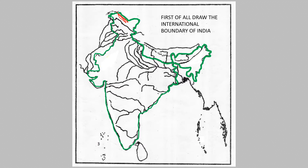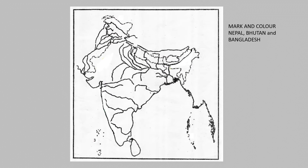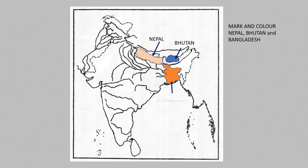Your first job is marking the international boundary line of India. The next step is marking in color Nepal, Bhutan, and Bangladesh. This area is Nepal, this is Bhutan — the blue color is Bhutan — and this orange color is Bangladesh.